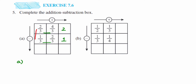For subtraction: 2/3 minus 1/3. Again, they are like fractions, so we subtract the numerators. The denominator stays 3, and 2 minus 1 equals 1. So the answer is 1/3.